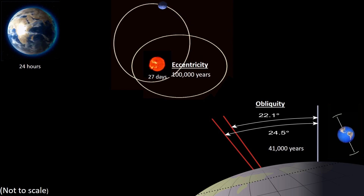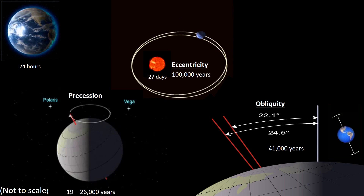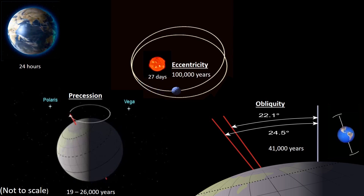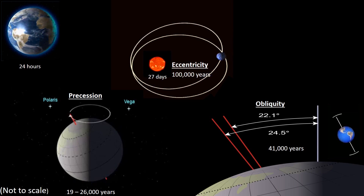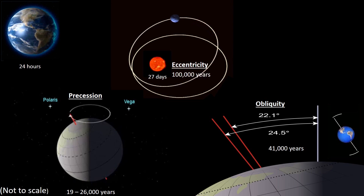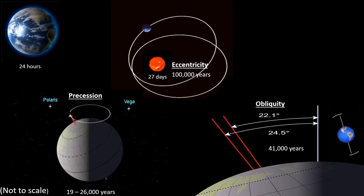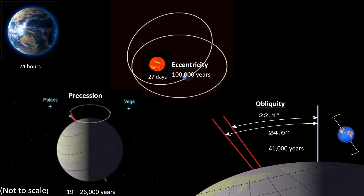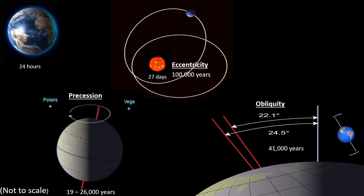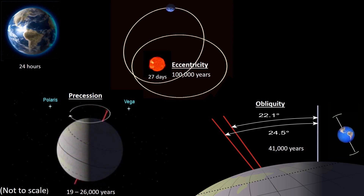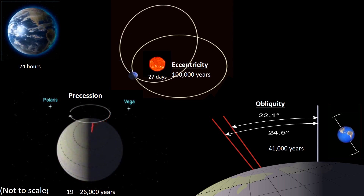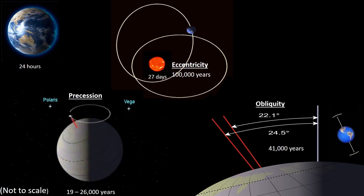The Earth also goes through a cyclic wobble. It moves from its current position of the North pointing to the star Polaris, to where the North points to the star Vega, and then returns to pointing at Polaris. The full cycle takes place over 19,000 to 26,000 years.